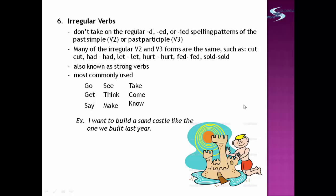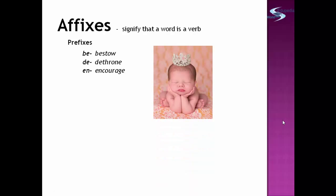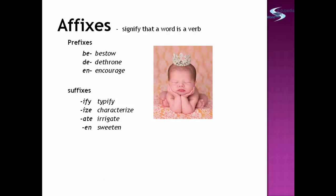We also have affixes, which signify that a word is a verb. First, we have prefixes: 'be-' as in 'bestow,' 'de-' as in 'dethrone,' and 'en-' as in 'encourage.' For example, the baby is bestowed with a crown. We also have suffixes: -ify as in 'typify,' -ize as in 'characterize,' -ate as in 'irrigate,' and -en as in 'sweeten.'